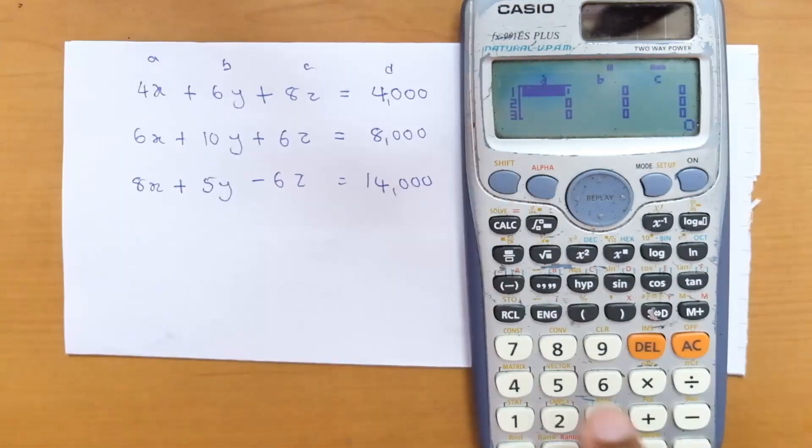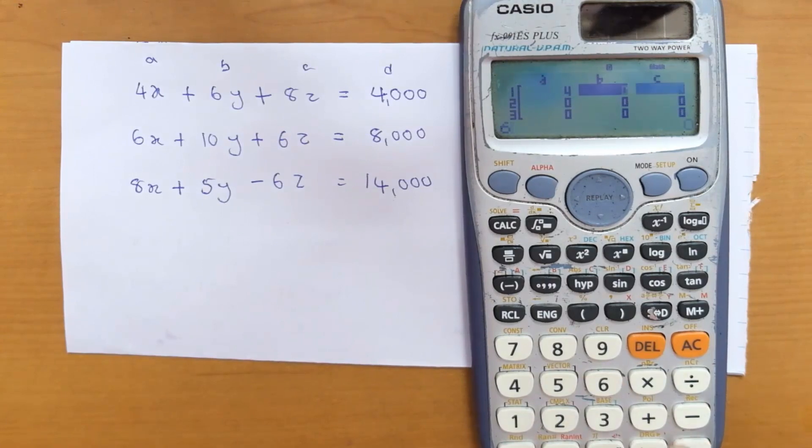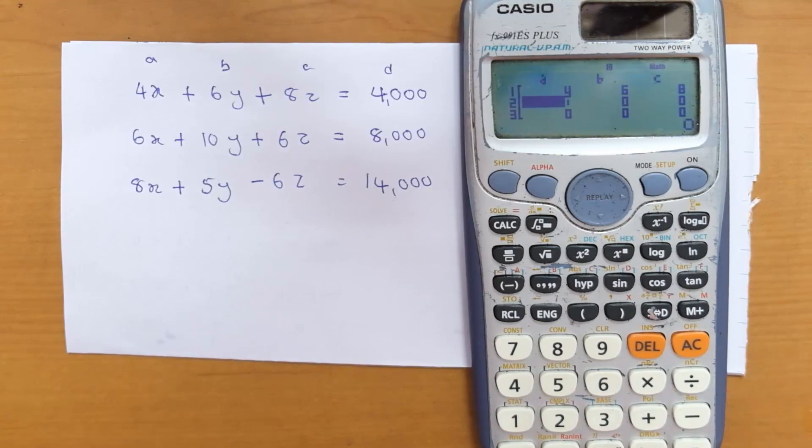Let's enter the values: 4 equals, 6 equals, 8 equals, 4000 equals. Again, 6 equals, 10 equals, 6 equals, 8000 equals. Again, 8 equals, 5 equals.